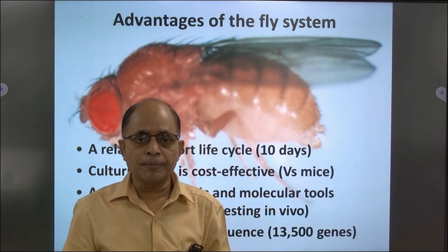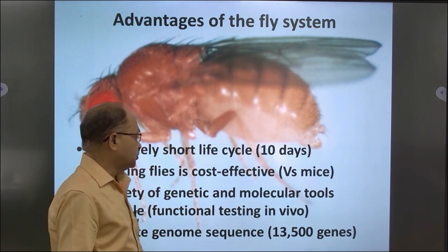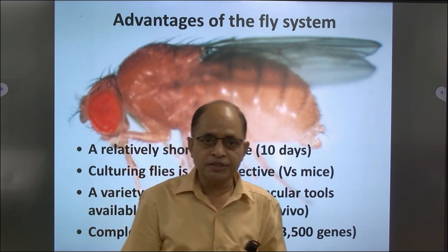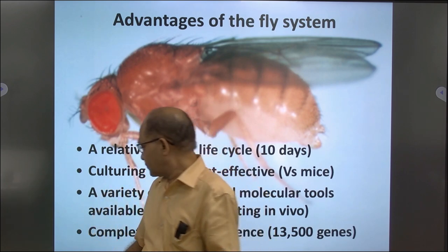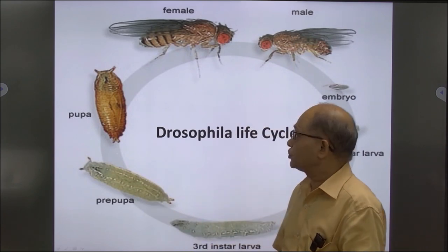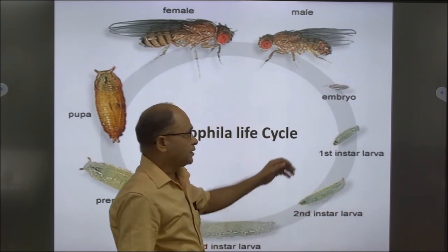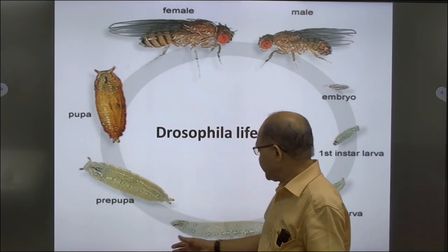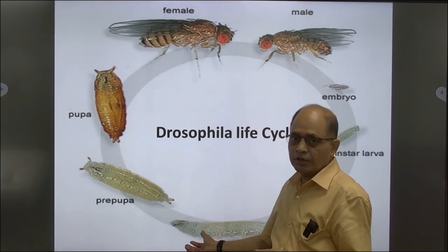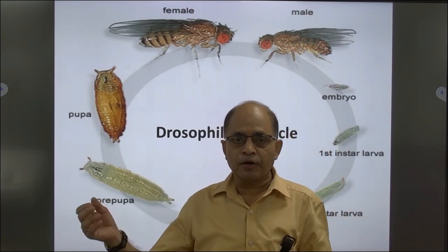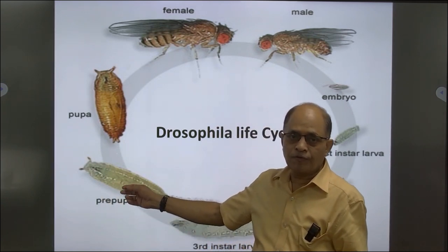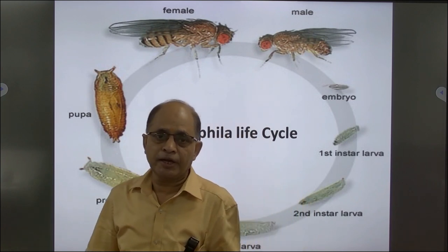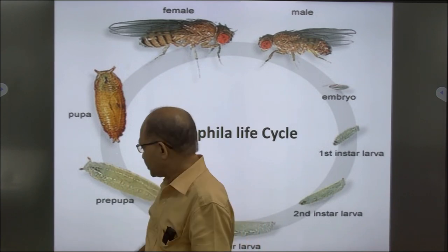The complete genome sequence has been completed through human genome projects. Currently it has been estimated that Drosophila has 13,500 genes. If you see the life cycle of Drosophila, female and male flies lay fertilized eggs, then they go through metamorphosis — first instar larvae, then second instar larvae, then third instar larvae. From the third instar larvae we extract polytene chromosomes for several studies. Then through metamorphosis it becomes a pupa, the matured pupa ecloses, and finally we get the adult fly — a complete metamorphosis typical of Dipterans.